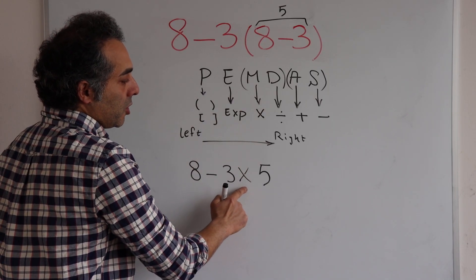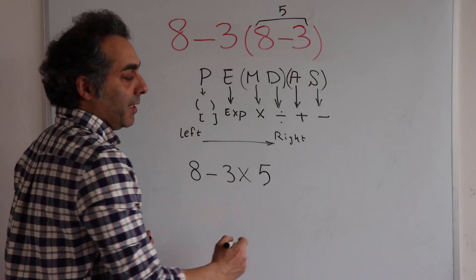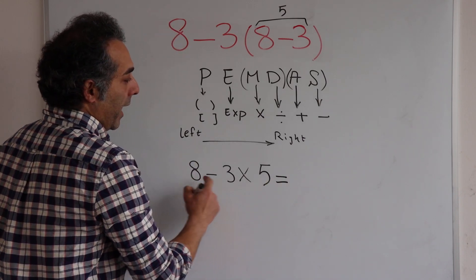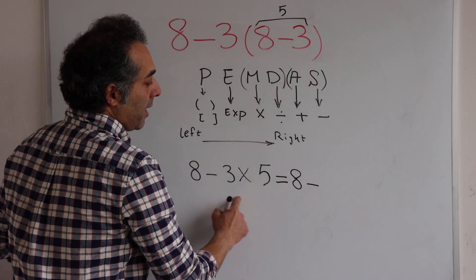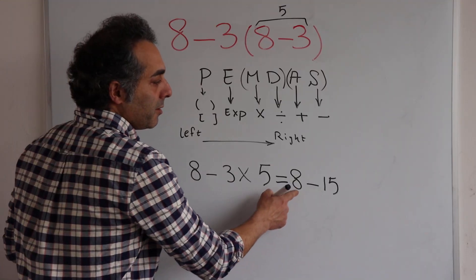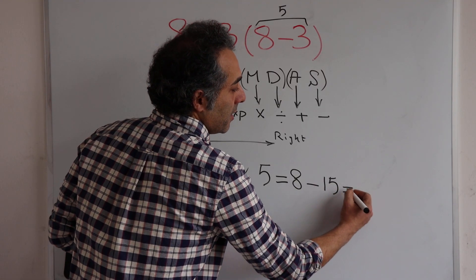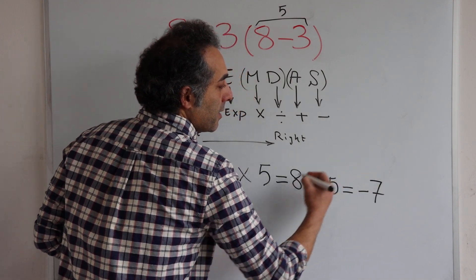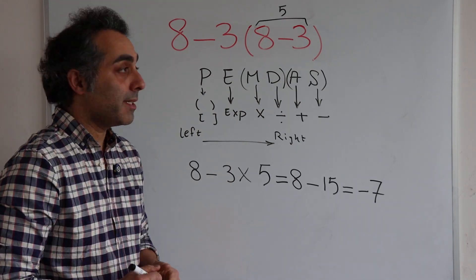So 3 times 5 is 15, so 8 minus the answer is 15, and you know 8 minus 15 is minus 7. Minus 7 is the right answer of this calculation according to the PEMDAS convention or PEMDAS rule.